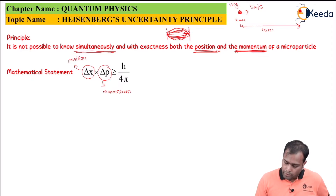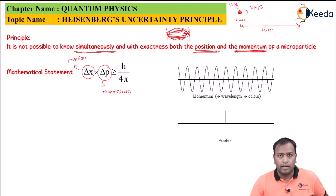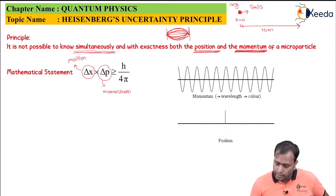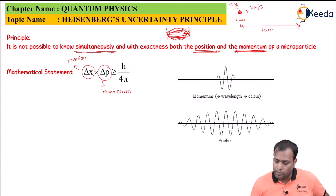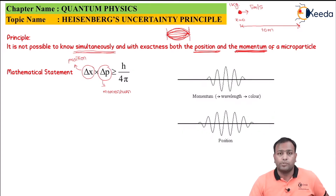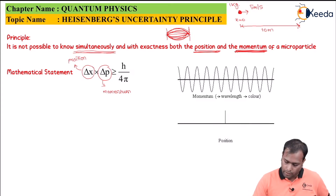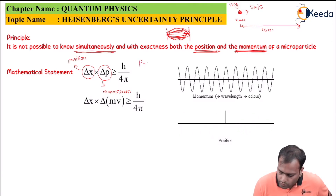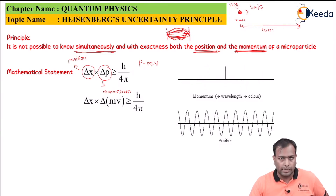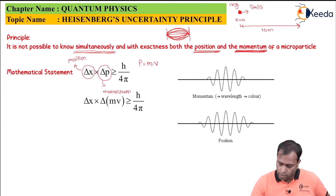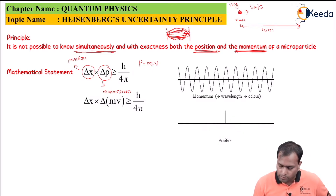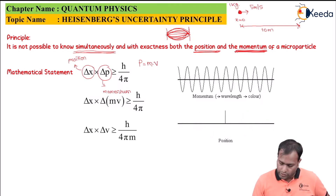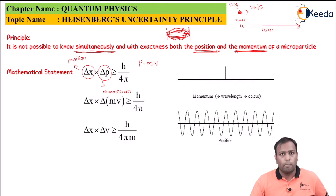This is how the graphical representation looks. As I try to accurately determine the position, my momentum uncertainty widens; whereas if I try to accurately determine the momentum, my position uncertainty widens — this trade-off is always constant. Since momentum equals mass times velocity (p = mv), and mass does not change significantly, we can write: Δx × Δv ≥ h / (4πm), where Δv is the uncertainty in velocity.